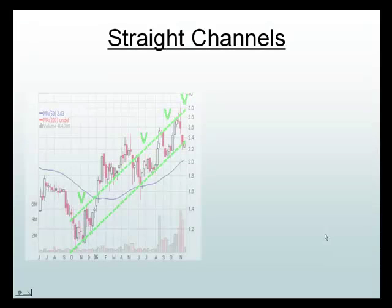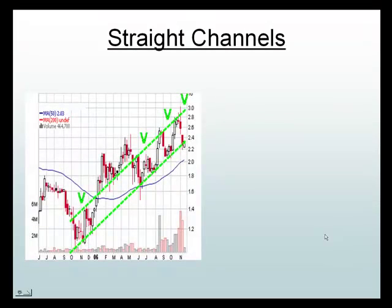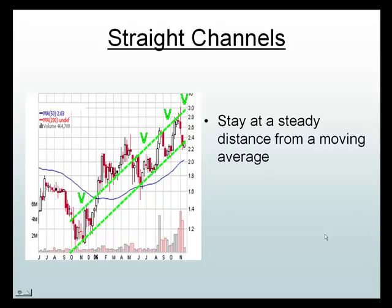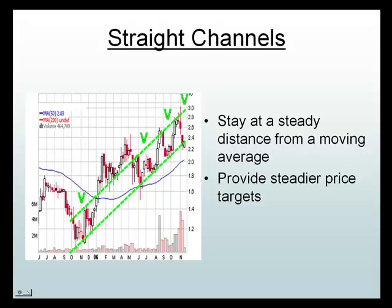Let's start off talking about straight channels. Many of us know these as trend lines. They stay a consistent distance away from the moving average. They also provide price targets — we go from the bottom with a target of reaching the top, and if we're selling at the top, our target is to get to the bottom. And then we get breakouts above and below the trend lines.